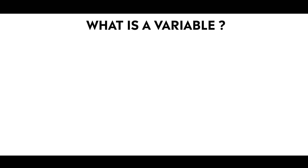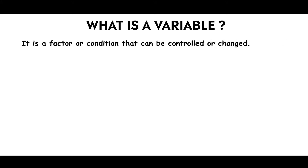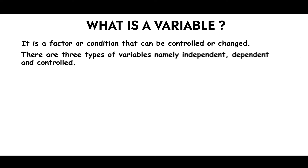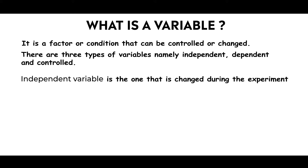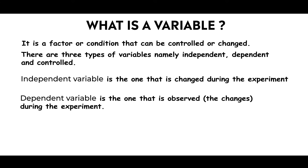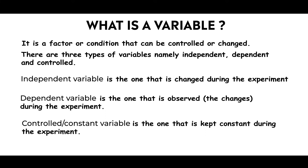Before we learn about the two gas laws, we have to know what a variable is. A variable is a factor or condition that can be controlled or changed. There are three types of variables: independent, dependent, and controlled. The independent variable is the one that is changed during the experiment. The dependent variable is the one where changes are observed, and the controlled — also known as the constant variable — is the one that is kept constant during the experiment.